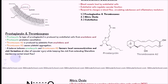A balance between prostacycline and thromboxane A2 is the ideal situation. It favours local vasoconstriction and clot formation when there is some form of injury to the vessel, helps to keep the clot in place, stops it from going elsewhere, and helps to maintain normal blood flow.